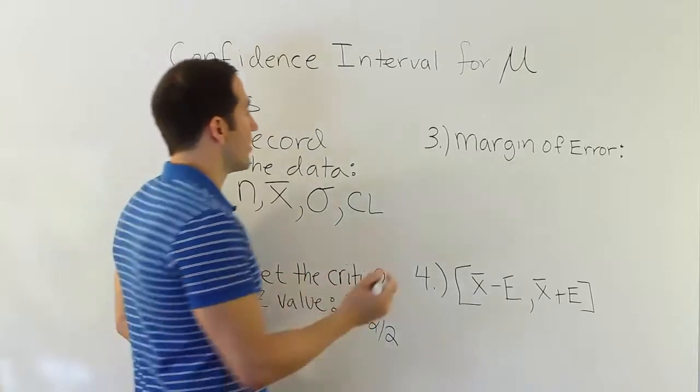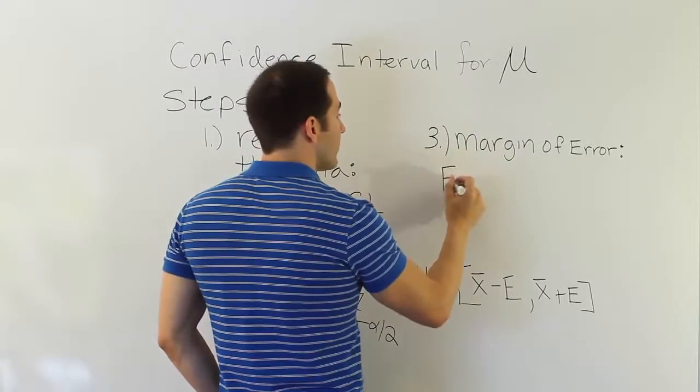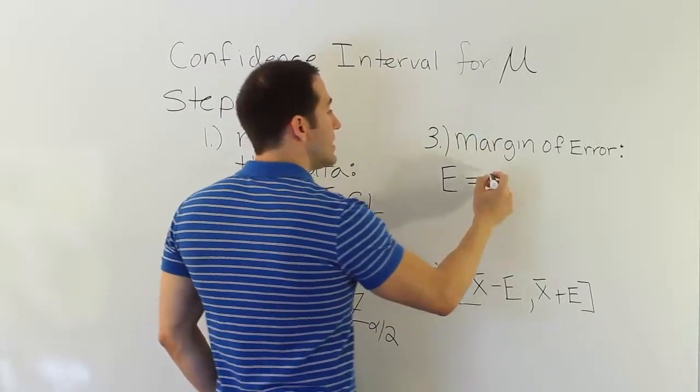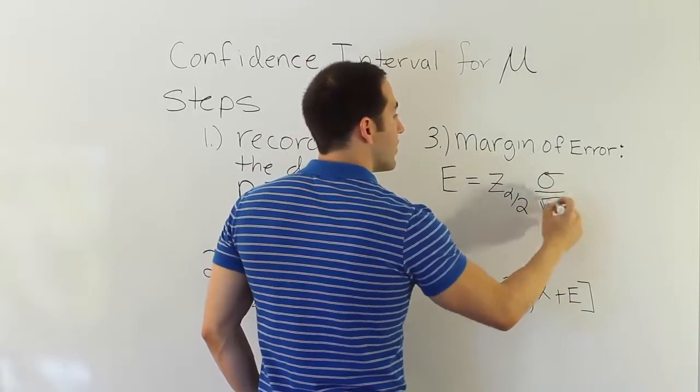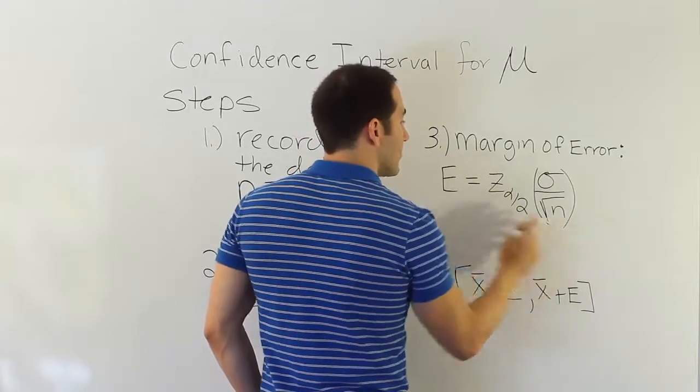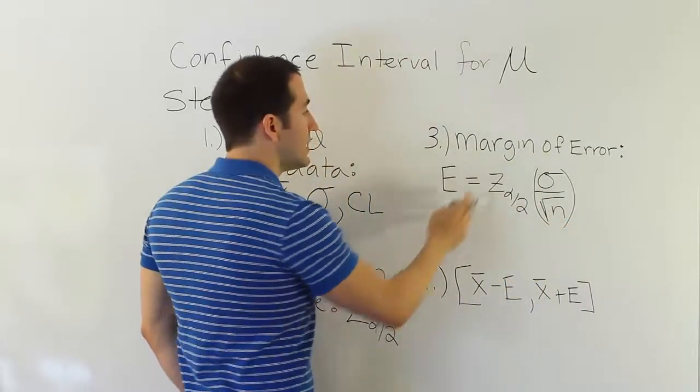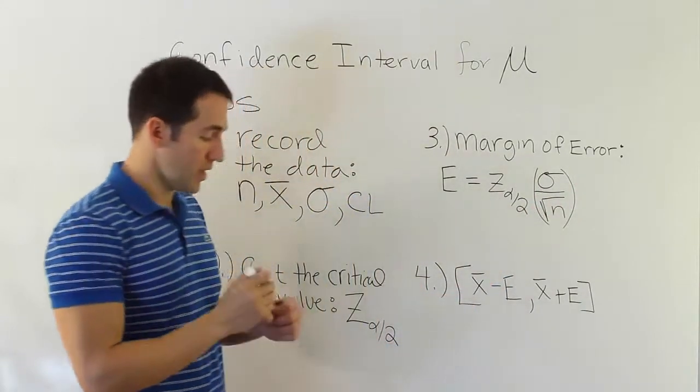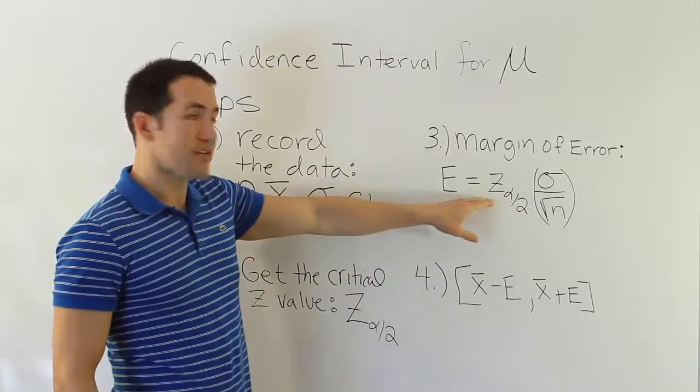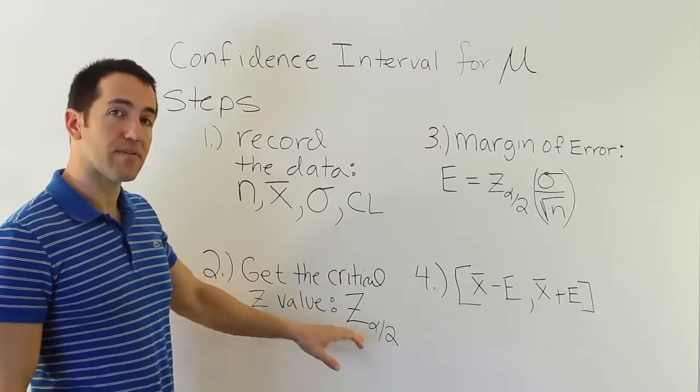The margin of error is a formula. The formula is E equals z_{α/2} times σ divided by the square root of n. So it's the product of these two quantities: z_{α/2} times σ divided by the square root of n. The z_{α/2} you would have had in step 2, so you have that number.